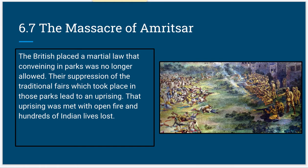6.7 is the aftermath when the British have already invaded India. Indian uprisings were kind of inevitable here, even though they suffered famine and didn't have many things. In the massacre of Amritsar, the British had put martial law into control over the Indians, prohibiting gatherings and anything that could possibly turn into an uprising. However, Indians were unsettled by this because they had traditions, including going to the fair. When they gathered into the parks and protested, they were shot and several hundred of them died.